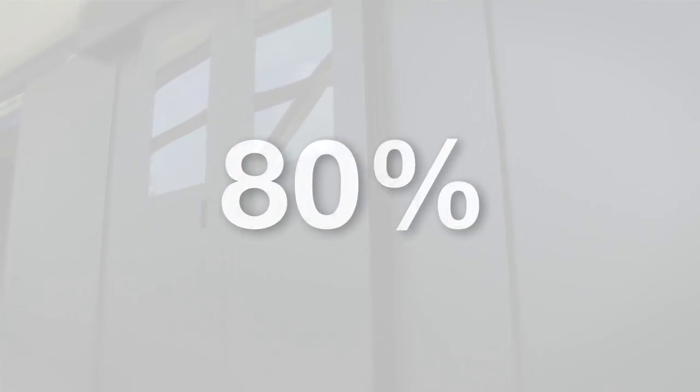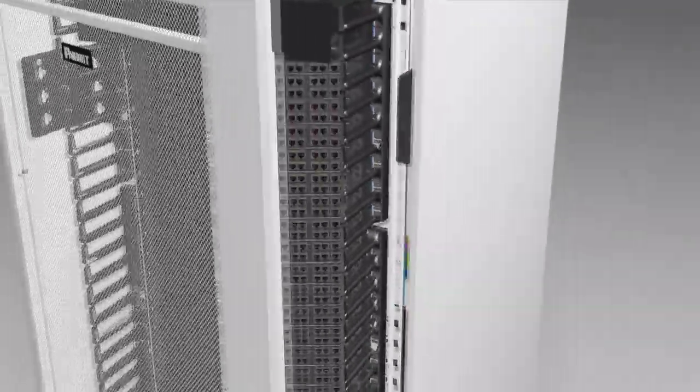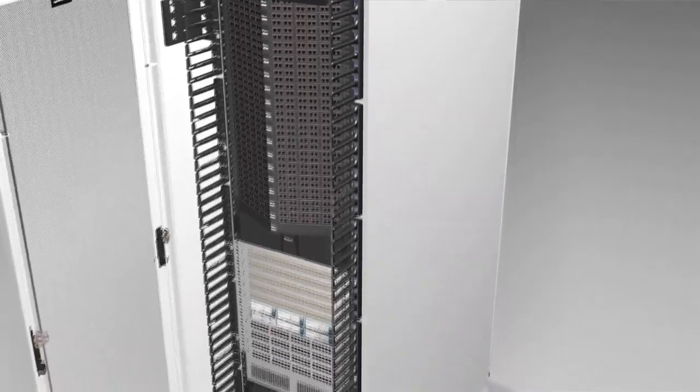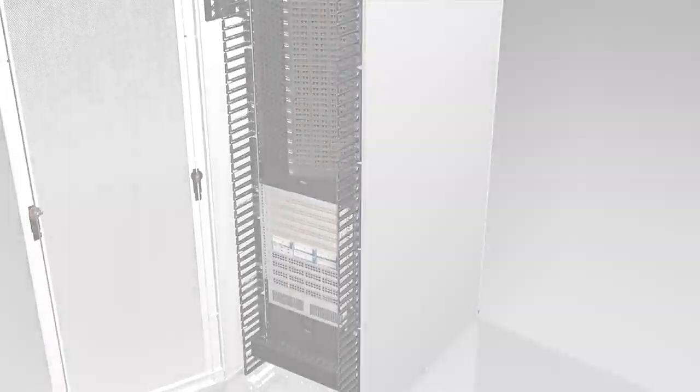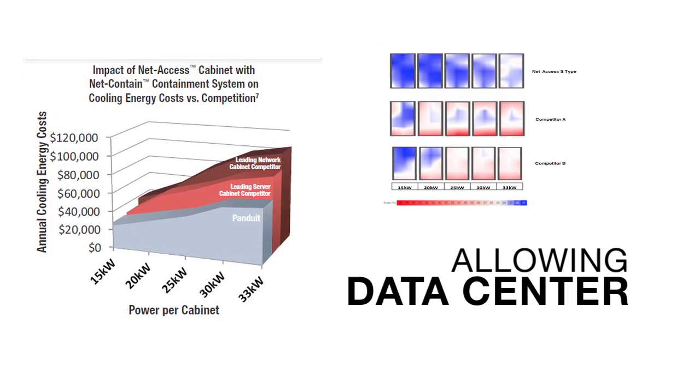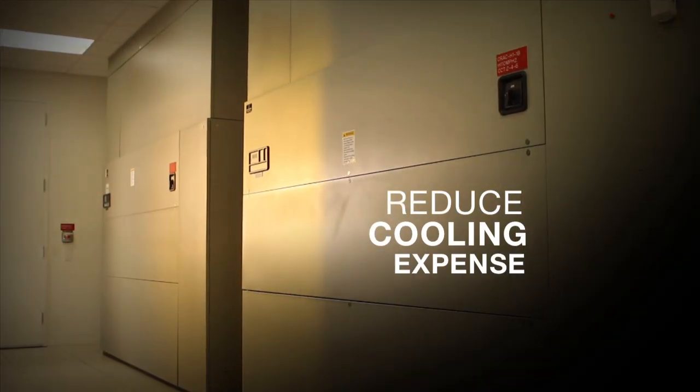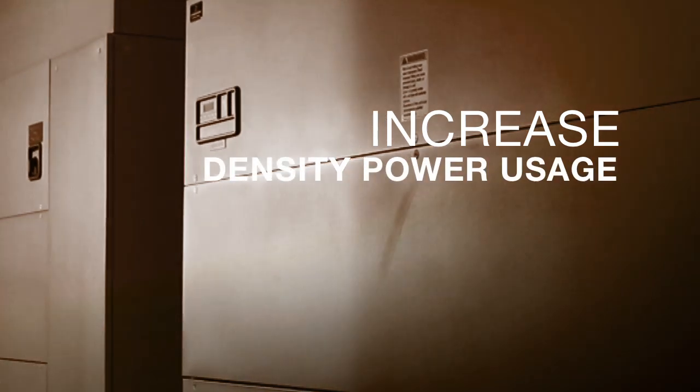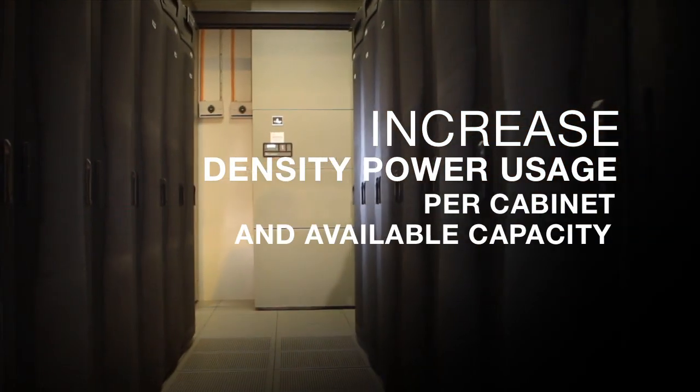Panduit Net Access Cabinets reduce the air leakage that's typically found in competitive cabinets by as much as 80%. By preventing hot air recirculation, a more consistent inlet temperature gradient can be realized across the entire front of the cabinet, allowing the data center set point to be raised. This results in reduced cooling expense and an increase in both density power usage per cabinet and available capacity.